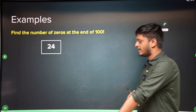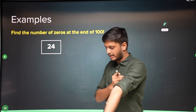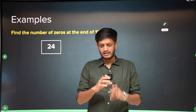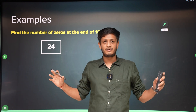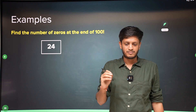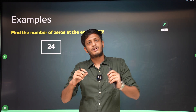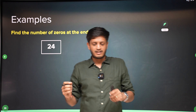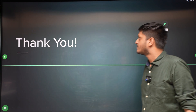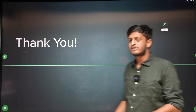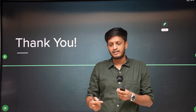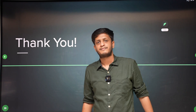Now you can do this for any n factorial — you just have to think clearly about how to make zeros at the end. That's all for factorials. In the next lecture we will learn permutations. Thanks!